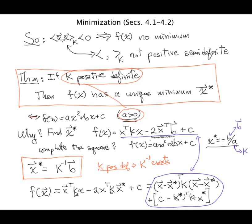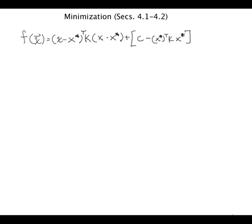So I suggest that you pause the video here and you just expand this out, expand and show that it's equal to this thing. Okay, and when you're done with that, go on to the next slide. Okay, so here's the formula for f of x, and because this term here is of the form vector k vector transpose k vector, this thing right here is clearly greater than or equal to zero, and the only way it can be zero is if x equals x star, and that's the minimum.